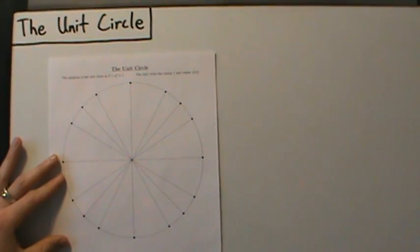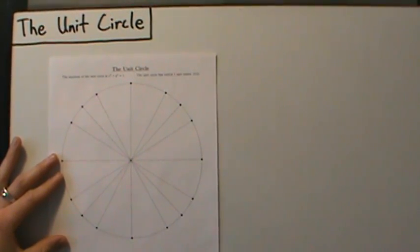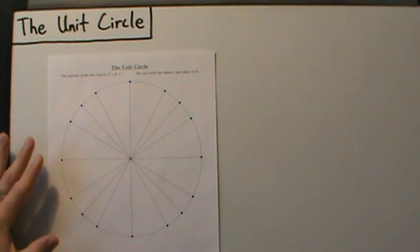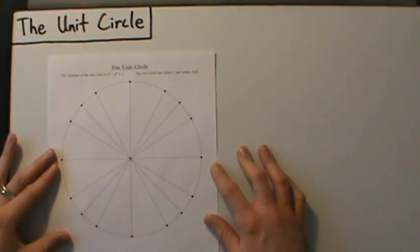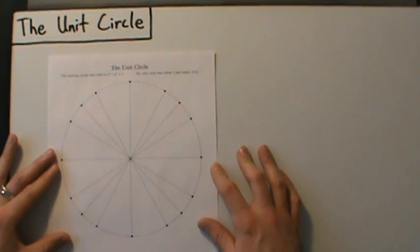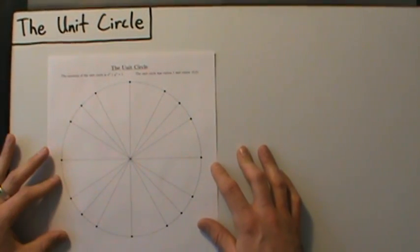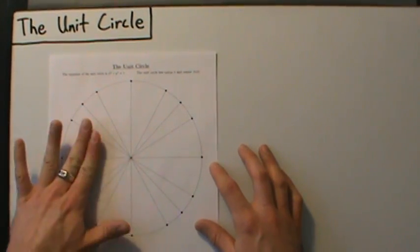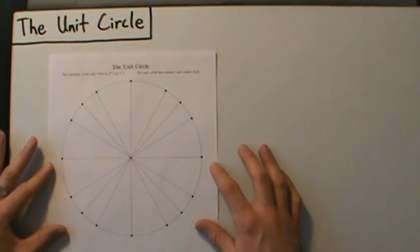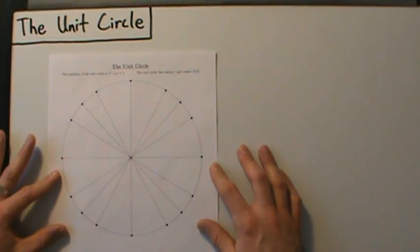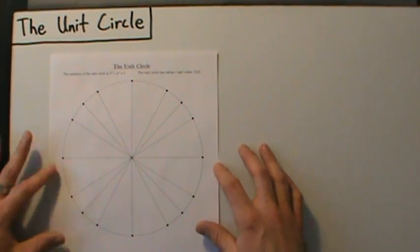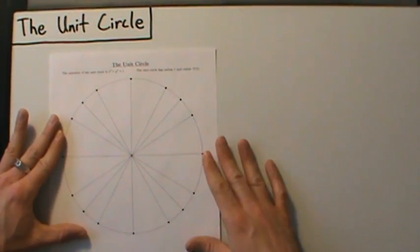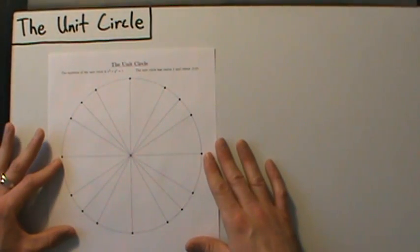In this video we're going to start talking about the unit circle. This is pretty much one of the most important concepts in trigonometry and also beyond trig. If you go on to things like calculus, you'll definitely want to know the unit circle pretty thoroughly. If you want a copy of this worksheet to follow along with, check the video description — there's a link in there.